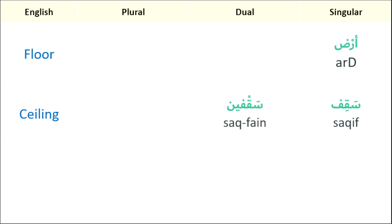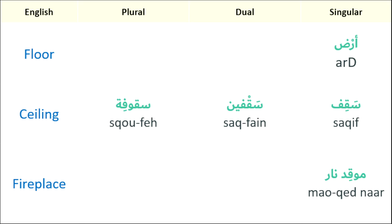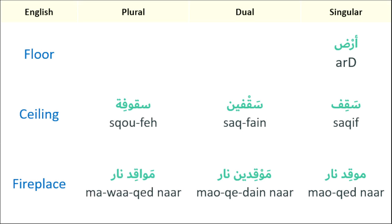Continuing the recap — Ceiling: dual 'saffin', plural 'saufi'. Fireplace: singular 'mawqid nar', dual 'mawqidain nar', plural 'mawaqid nar'.